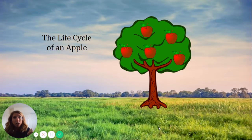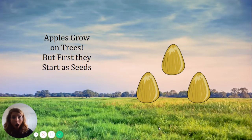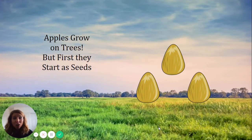We're going to learn where apples come from. Let's get started! Apples grow on trees, but first they start as seeds. I see some apple seeds — let's count them: one, two, three. There are three apple seeds.